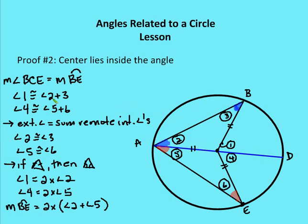Angle one equals angle two plus angle three — the exterior angle equals the sum of the remote interior angles — and angle four equals angle five plus six. Angle two and angle three are congruent because radii are congruent, giving two congruent sides of the triangle. Similarly, angle five and six are congruent. So angle one equals two times angle two and angle four equals two times angle five. By substitution, the measure of arc BE equals two times the quantity angle two plus angle five, which is the measure of angle BAC.